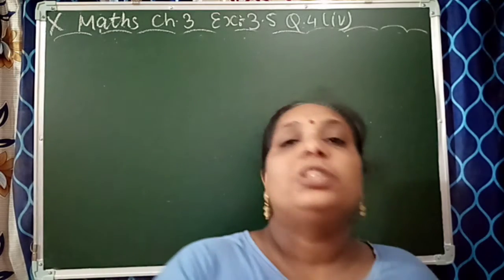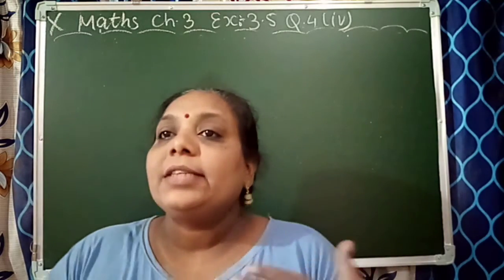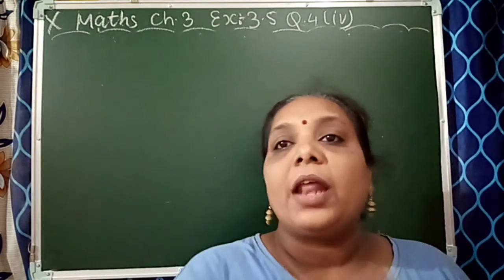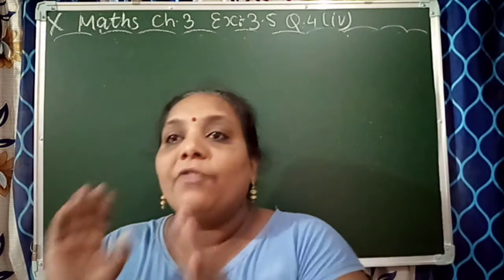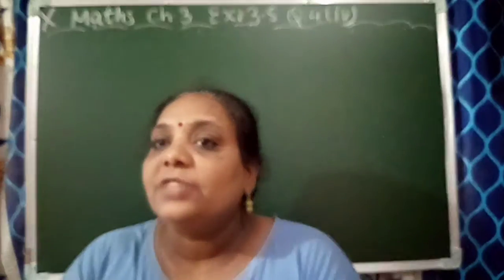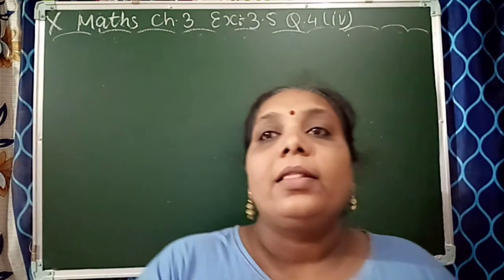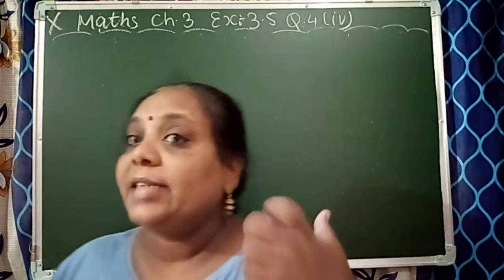Places A and B are 100 km apart on a highway. One car starts from A and another car starts from B, at the same time.